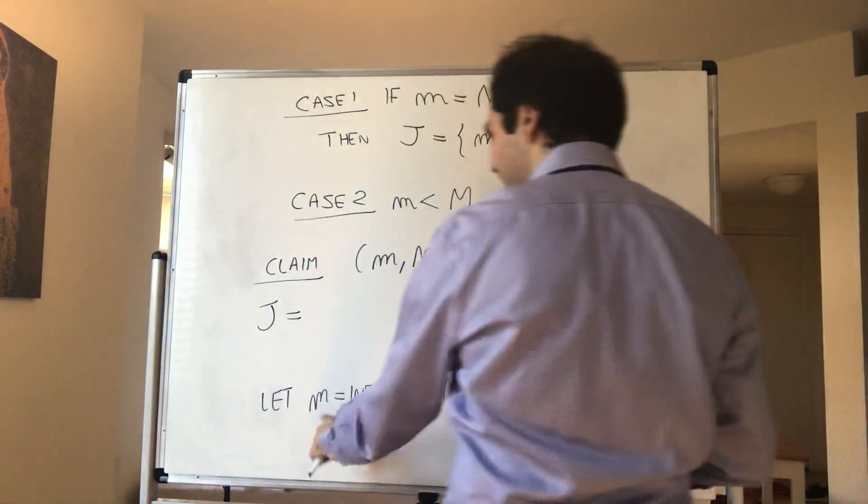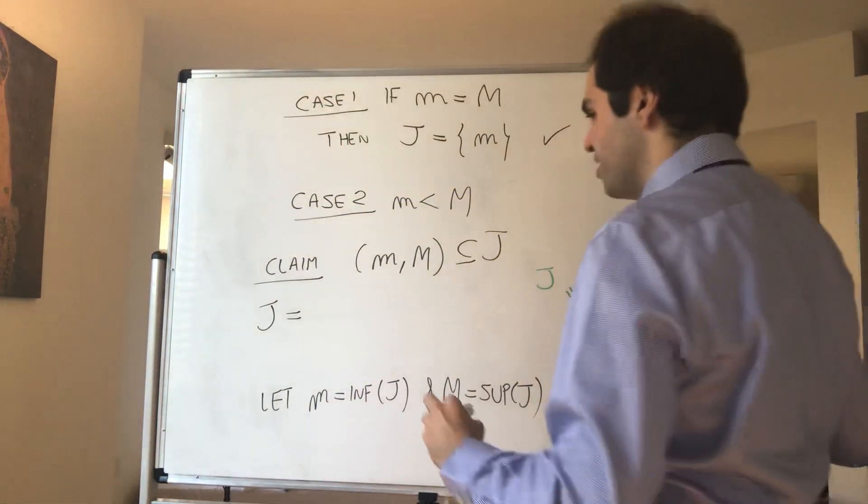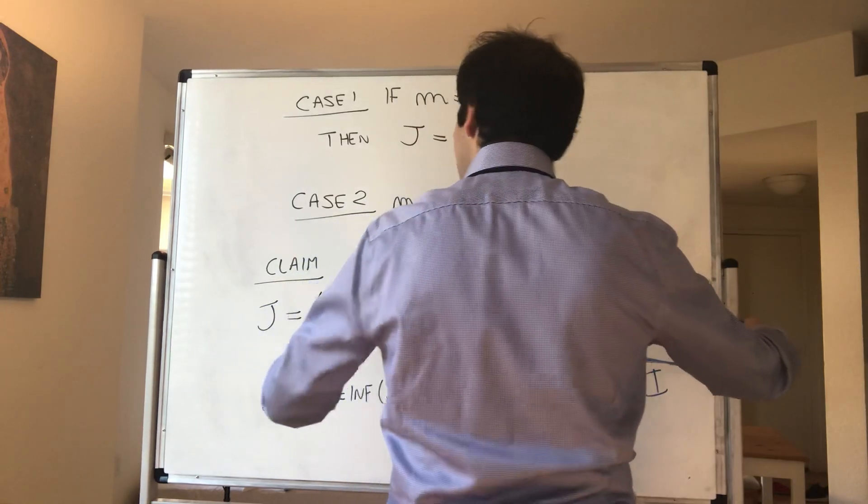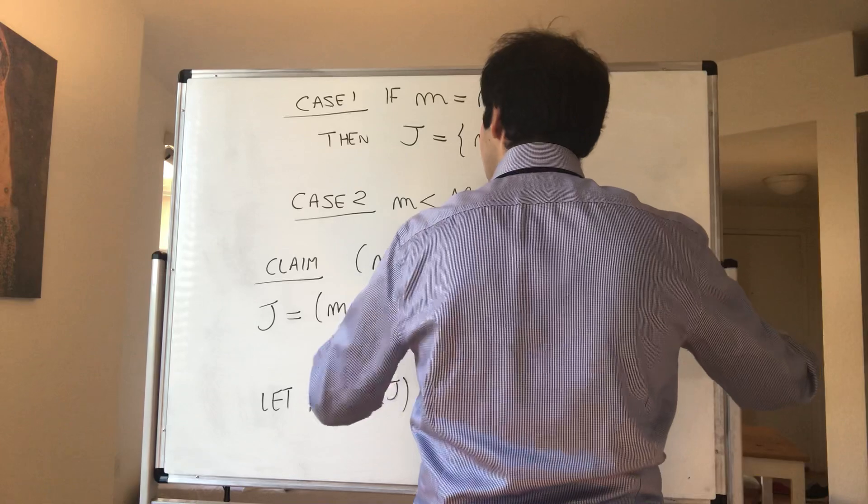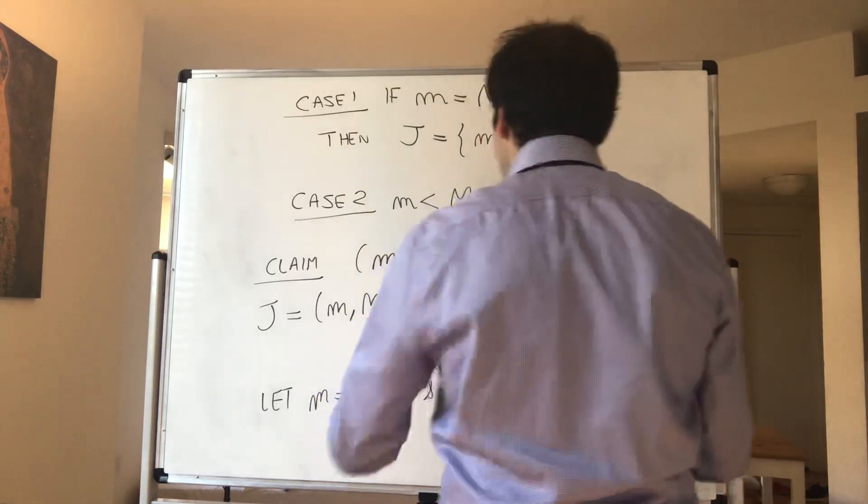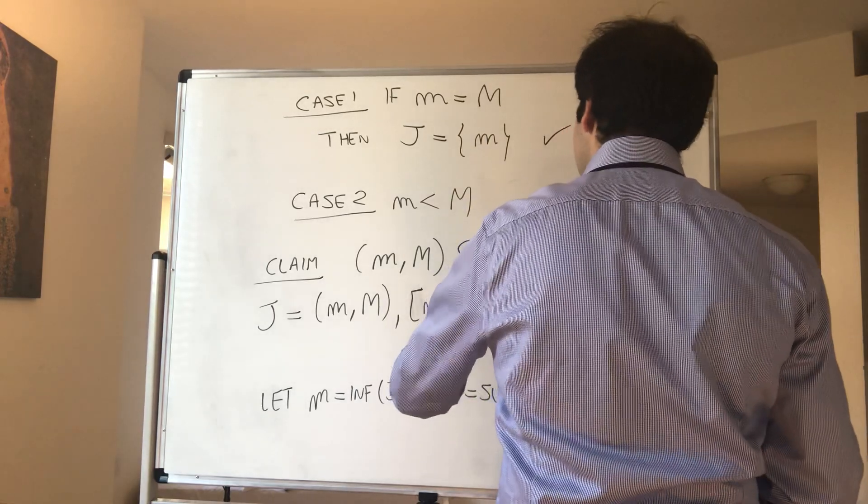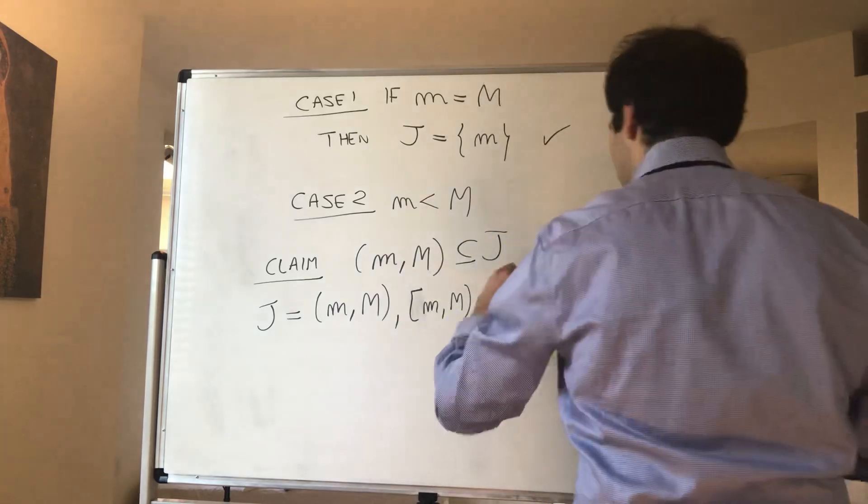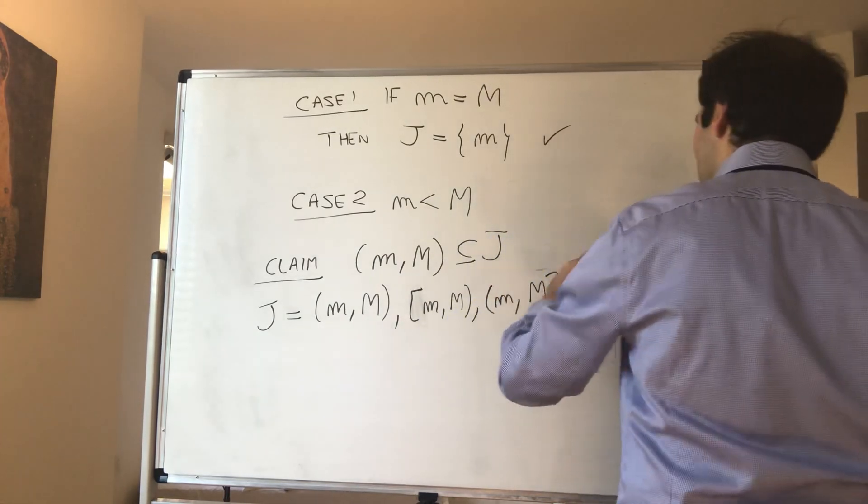Because then what is J? Because remember, m is kind of the minimum and capital M is the maximum. So J could either be the open interval, or it could include the minimum but not the maximum, or it could not include the minimum but have the maximum.